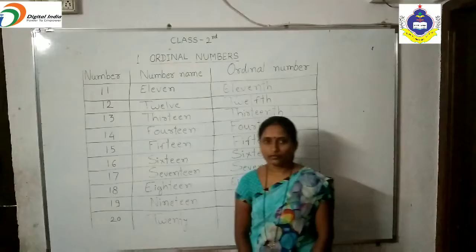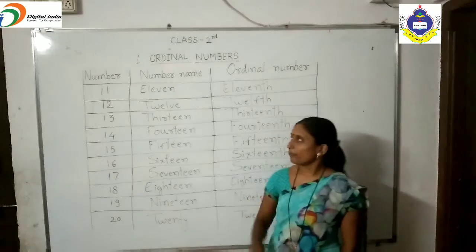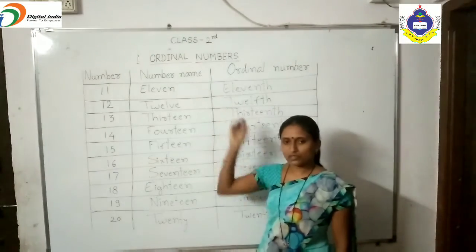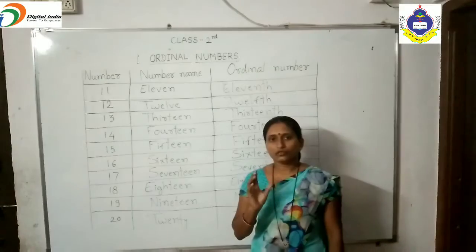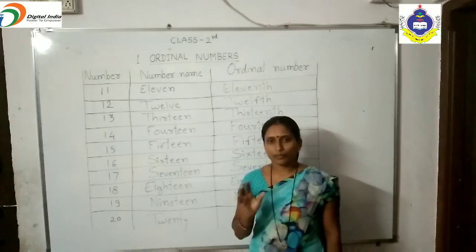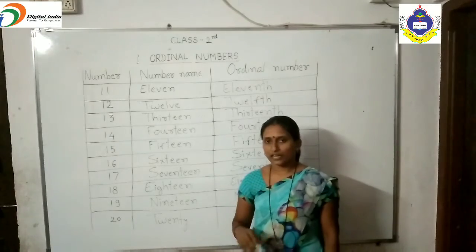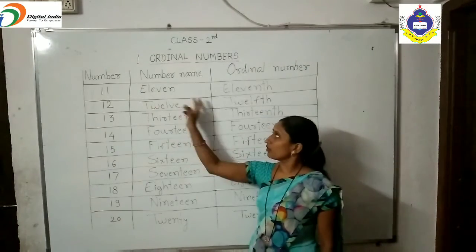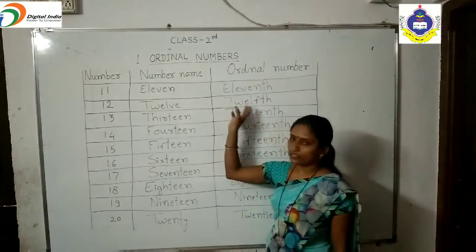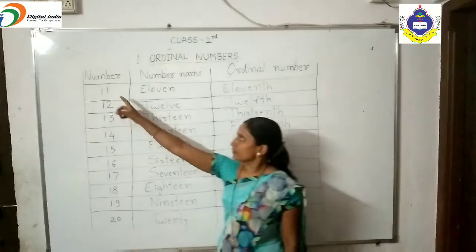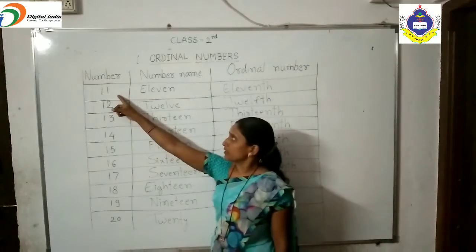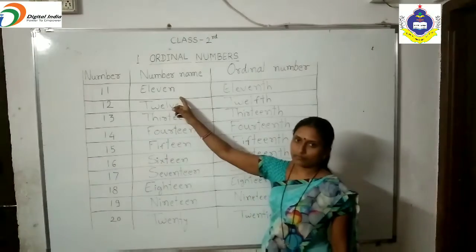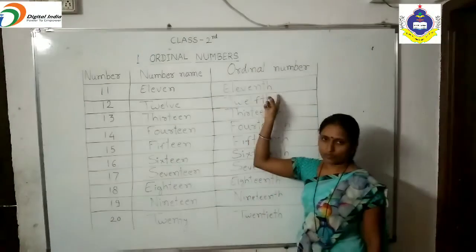Today we learn a maths topic: Ordinal Numbers. So, take your pencil and notebook and write down three columns in your notebook. The first column is number, the second is number name, and the third is ordinal numbers.